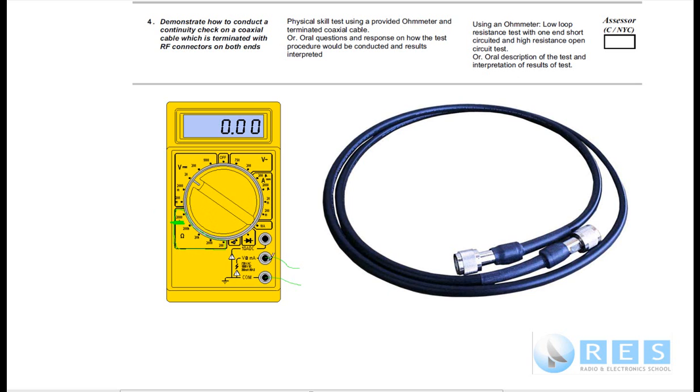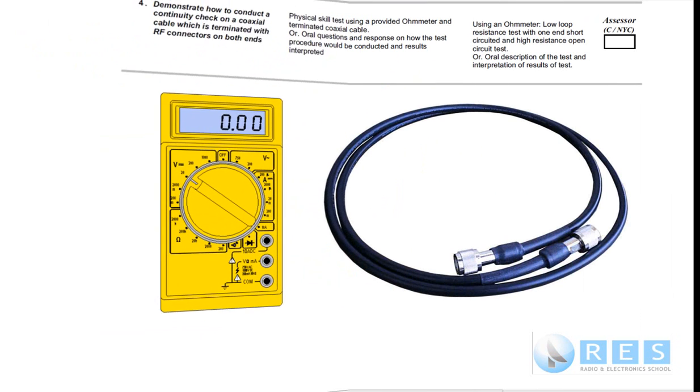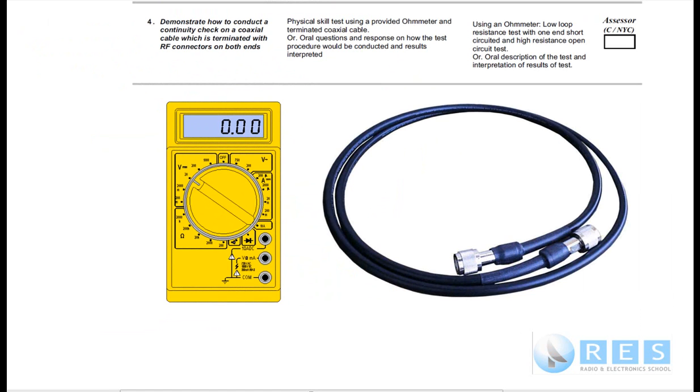You would switch to the high ohms range and put the multimeter, one lead on the pin and the other lead onto the outside. Since the other end of the plug should be open circuit and the center conductor should not be touching the outer shield, you would read a high resistance or infinite resistance. On the high ohms scale going between the center conductor and the outer conductor with the other end open, you should read a very high resistance or an open circuit. So we've checked for a high resistance on one end between the pin and the shield.